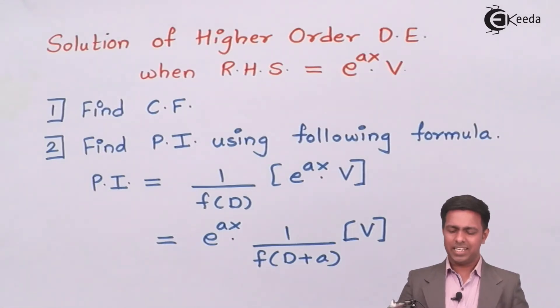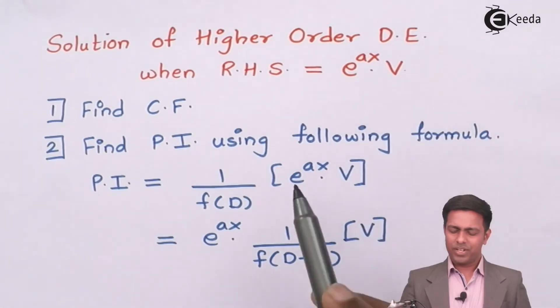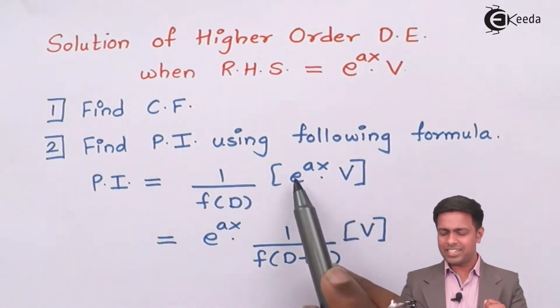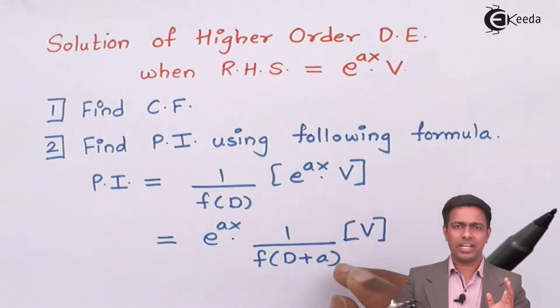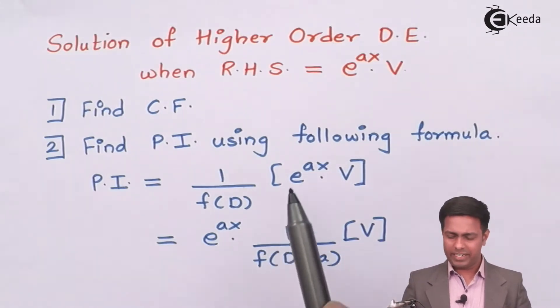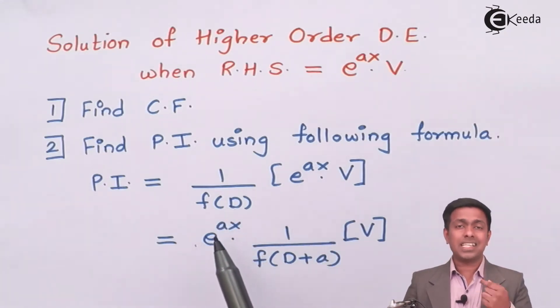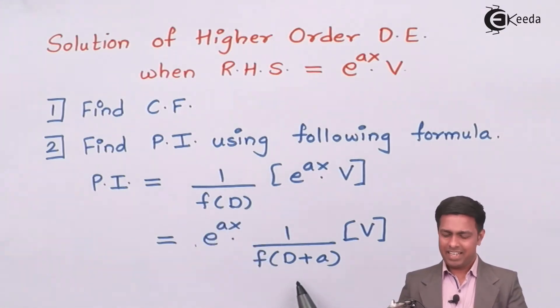Normally the formula for particular integral is 1 upon function of D into right-hand side. As I am saying, our right-hand side will be e to the power ax into V. Whenever you have right-hand side like this, first of all take that e to the power ax term outside, then take that a and replace the D by D plus a, so that f of D will become f of D plus a.